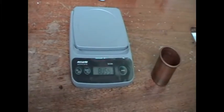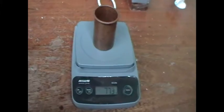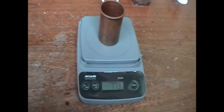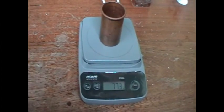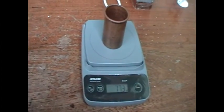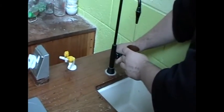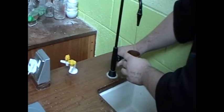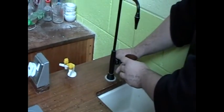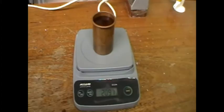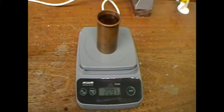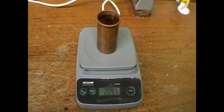Zero the electronic balance. The mass of the copper calorimeter is 77.3 grams. Add some cold water to the calorimeter. The mass of the calorimeter plus water is 209.7 grams.